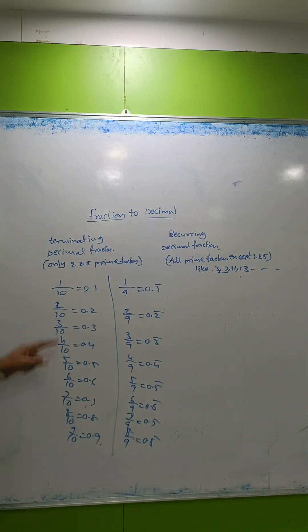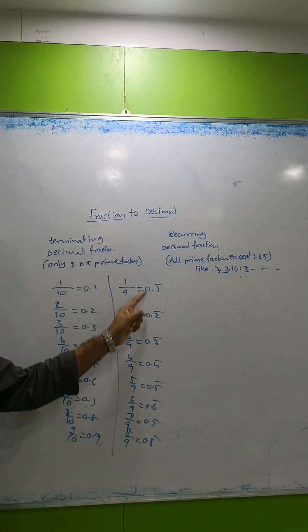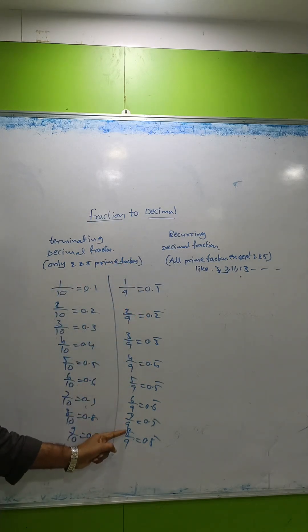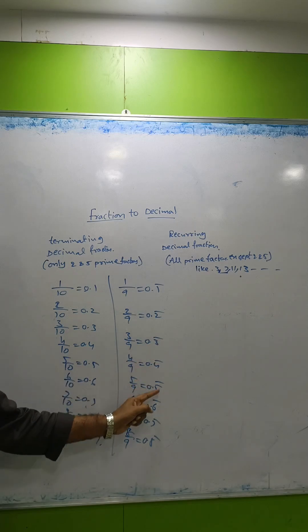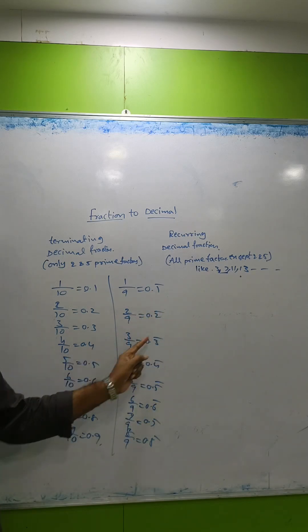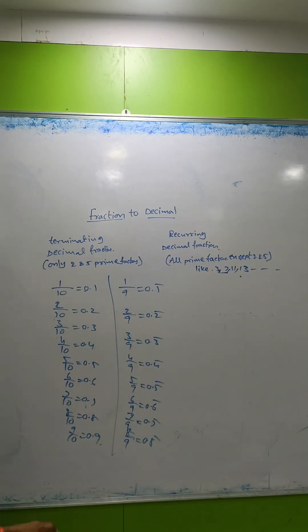With terminating decimals we had 1, 2, 3, 4, 5, 6, but with recurring decimals having denominator 9, we get one bar, two bar, three bar, four bar—the digits repeat: 1-1-1, 2-2-2. These are repeating decimals.